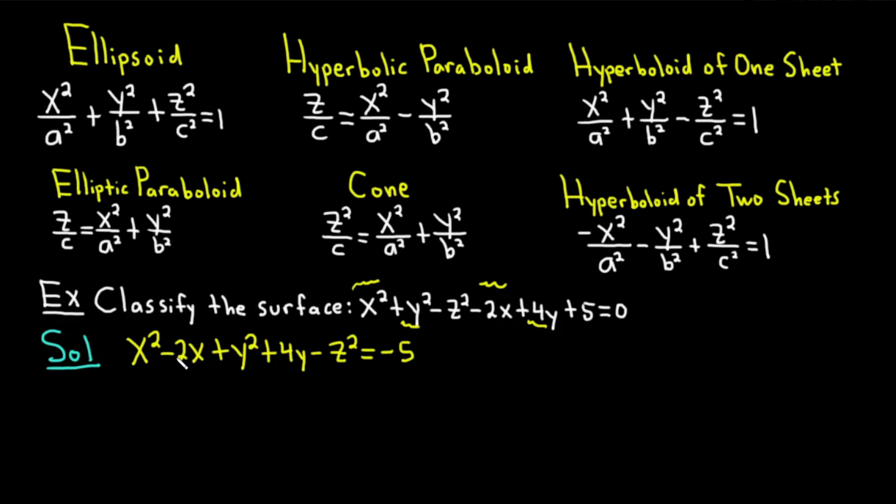All right, so now we're going to complete the square. So I'm going to write down x squared minus 2x. And in order to complete the square here, you look at the coefficient of x, you divide it by 2 and you square it. In this case, the coefficient of x is negative 2. We divide it by 2 and then we square it. That's just going to be negative 1 squared, which is equal to 1. So I'm going to put a plus 1 here.